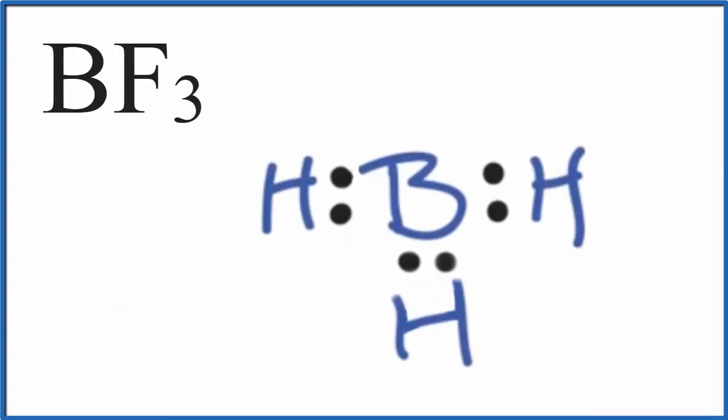So the Lewis structure helps us understand how the valence electrons are distributed, and then that valence shell electron pair repulsion theory gives us the shape. From the shape, we can tell if the molecule is polar or not.